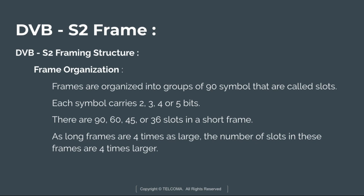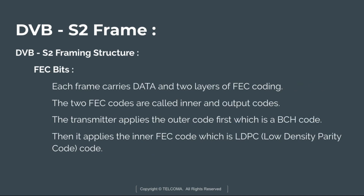Frames are organized into groups of 90 symbols called slots. There are 180, 270, 360, or 450 bits in a slot. Each symbol carries 2, 3, 4, or 5 bits, and there are 90, 60, 45, or 36 slots in a short frame. Long frames are four times as large, so the number of slots in long frames is four times larger.